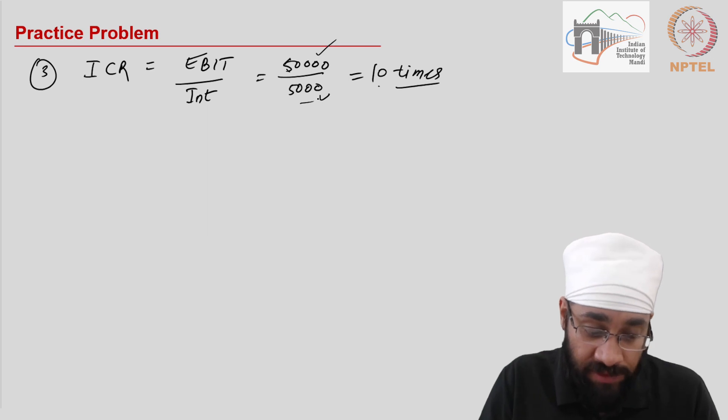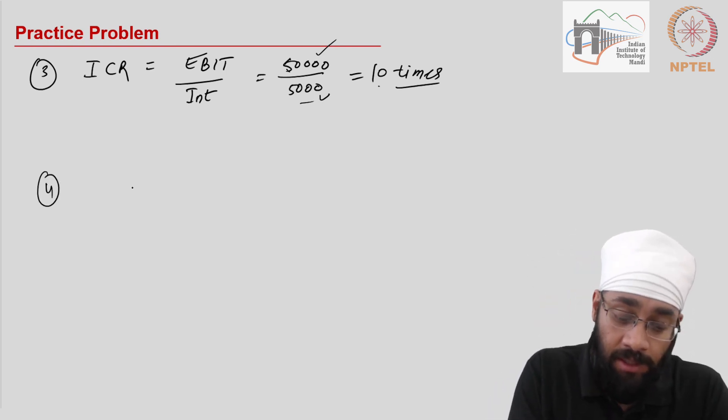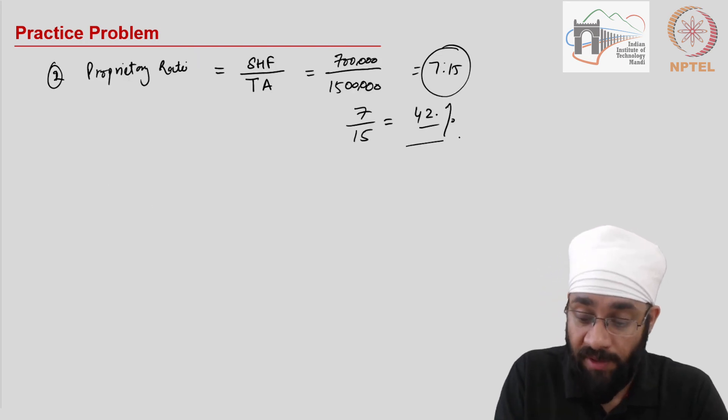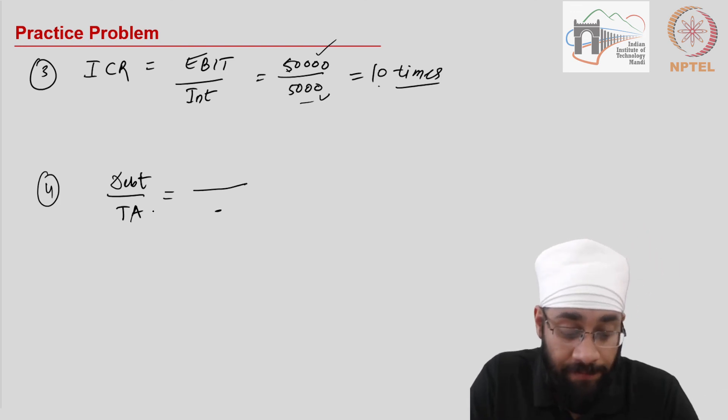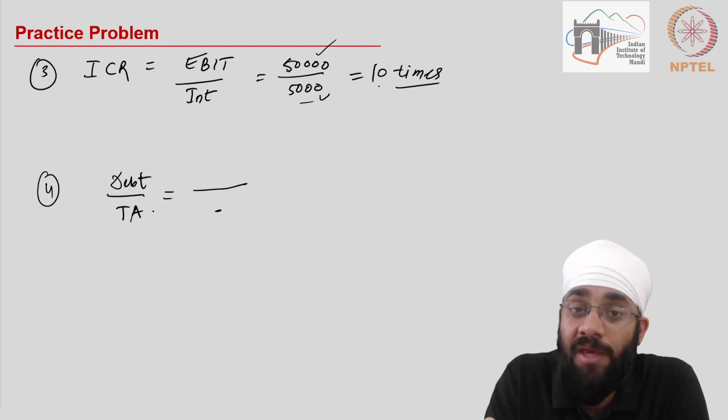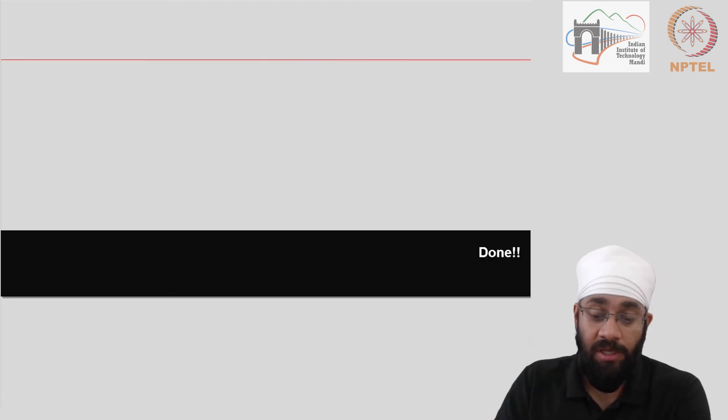So these are three ratios which we have discussed that we use in commenting on the long-term financial position of the business. There can be other ratios—for example, you may want to know what is the contribution of debt to the total capital, which is essentially the complementary of the proprietary ratio. The ratios could be manufactured; you could come up with a new ratio if it is relevant to the business. Of course, you can't just be making stuff up which gives you no information. Whatever information is required, accordingly you could create a new ratio. But these are some standard indicators which are used by various business websites or in the annual report of the company. Okay, let me stop here. I'll see you in the next video.